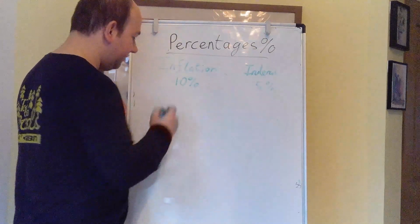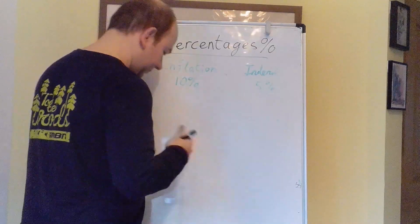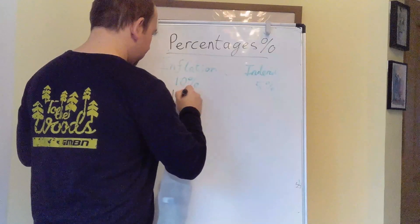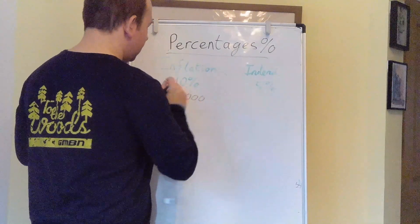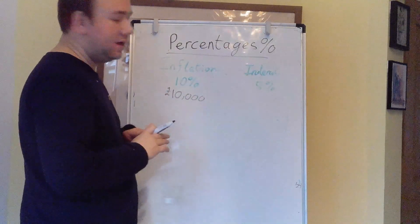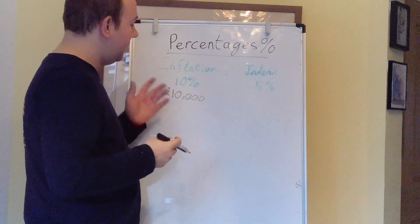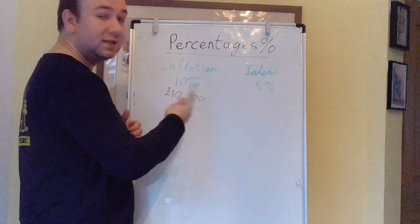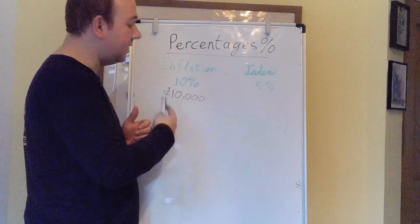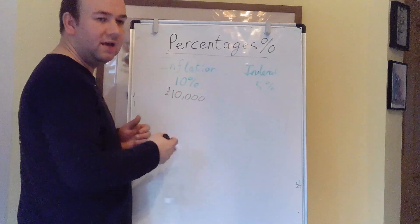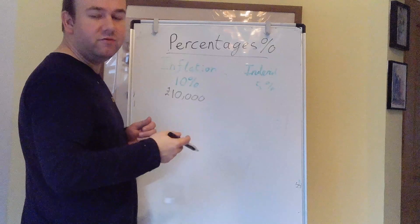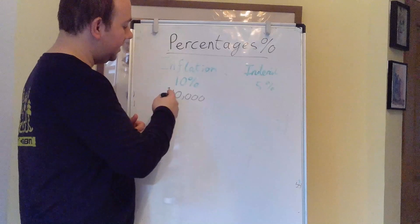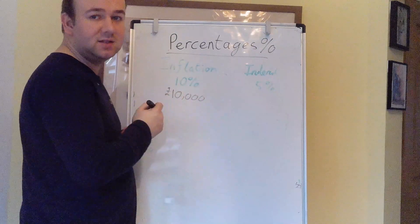So let's say you had £10,000. If inflation keeps going up by 10%, how much money in three years' time would you need to buy that same quantity of Mars bars? So every year it's going to go up by 10%.